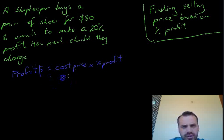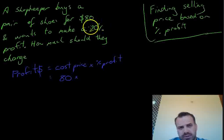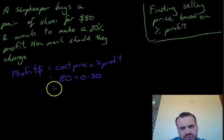Now the cost price is $80, that's easy. Now when you do the percentage profit in this type of question, you really need to make sure that you express it as a decimal, not as a percentage. So 20% is going to be 0.2. Now if you type that into your calculator, 80 times 0.2, that'll be $16.